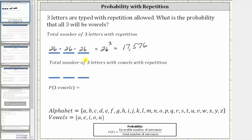Now to determine the total number of ways three letters can be typed with vowels with repetition allowed. Because there are five vowels, there are five ways to type the first vowel, five ways to type the second vowel, and five ways to type the third vowel. Therefore there are five times five times five, or five cubed ways of typing three letters with vowels with repetition allowed, which is equal to 125 ways.